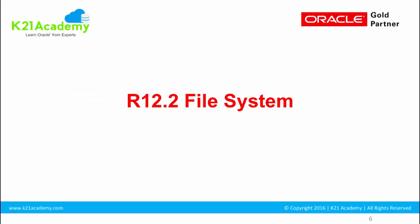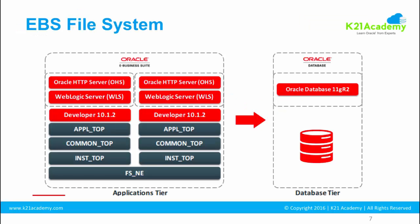Let's start with the R12.2 file system. This is how the EBS file system looks like — on the left-hand side you have the application tier and on the right-hand side you have the database tier. When we installed Oracle E-Business Suite in the previous module, we installed both the database part and application tier on the same host, and we selected the base directory as /u01/app/oracle. In that base directory you will see the database as well as the EBS file system.